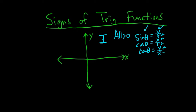The reciprocals in this case would also be positive — so cosecant, secant, and cotangent are all positive in quadrant 1.